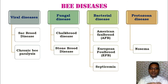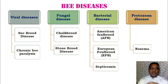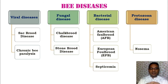The second category is fungal diseases, including chalk brood disease and stone brood disease. Third is bacterial disease: American Foulbrood (AFB), European Foulbrood (EFB), and septicemia. The fourth is protozoan disease — nosema disease — which causes severe damage and declines colony productivity. In this lecture we focus on viral and fungal diseases.